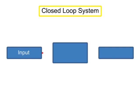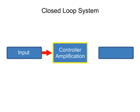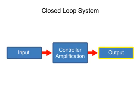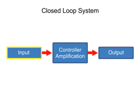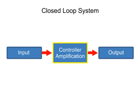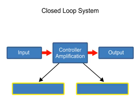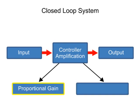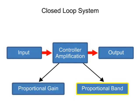In a closed-loop system, a controller is used to amplify the amount of output change in proportion to the change that occurs at the input. Controllers provide amplification using one of two modes of proportional functions: proportional gain and proportional band.